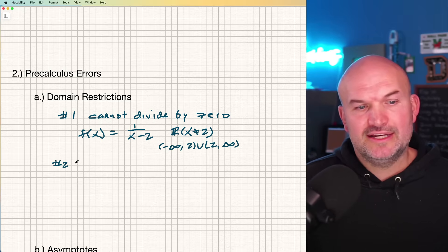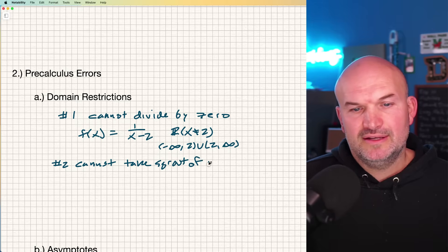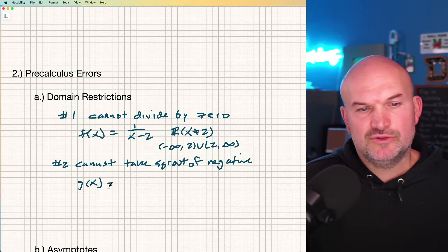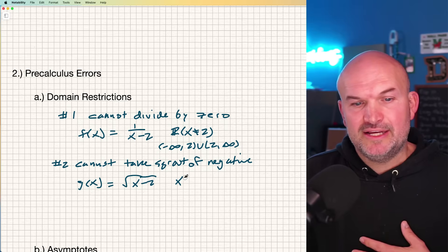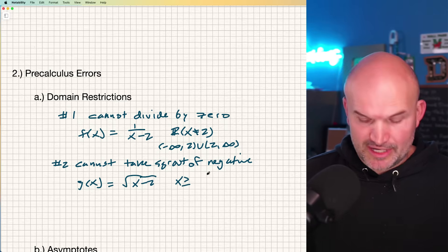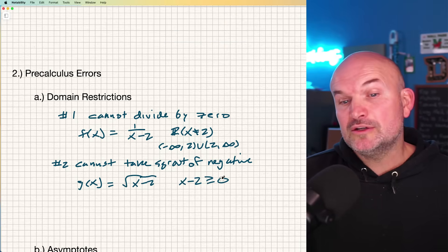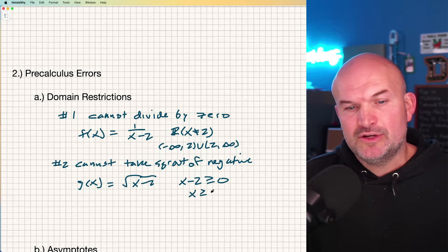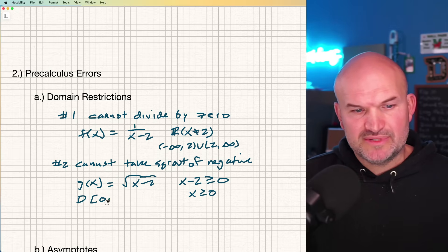Number two is you cannot take the square root of a negative number. That actually works for any even root. If I have a different function, let's do g(x), and let's say it's √(x-2). To simplify the domain, take whatever is under your radical, x minus two, has to be greater than or equal to zero. You can take the square root of zero, you just cannot take the square root of a negative number. When I add two to both sides, I get x has to be greater than or equal to two. If I want to write that as a domain, that's going to be from two to infinity.